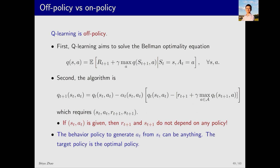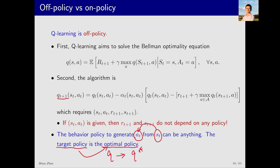The behavior policy in Q-learning is responsible for selecting action a_t at state s_t. The target policy, on the other hand, selects the action with the highest Q value. As the Q value gradually converges to the optimal Q value, the target policy also converges to the optimal policy. Therefore, the behavior policy and target policy in Q-learning are different, making Q-learning an off-policy algorithm. Next, we introduce the implementation details of off-policy Q-learning.